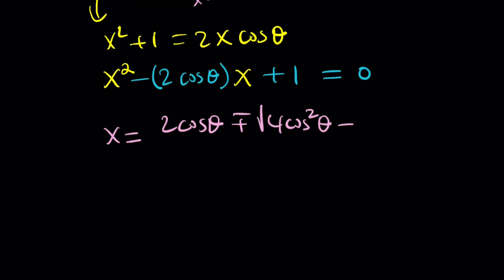So far, so good. Minus 4ac, a is 1. So it's just going to be minus 4c, but c is 1. So it's just going to be minus 4. Great. Don't you like it when a and c are both 1? And that's all divided by 2. Awesome.